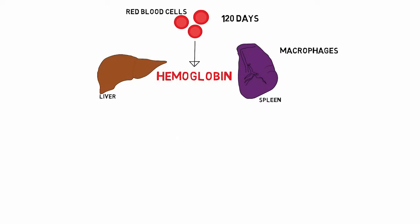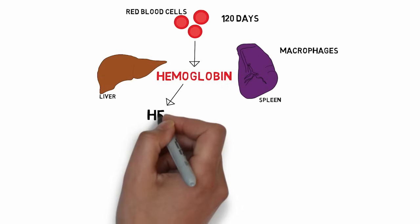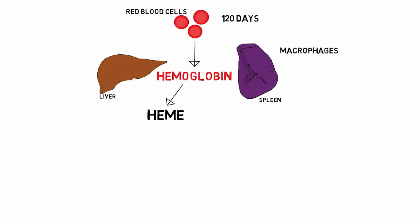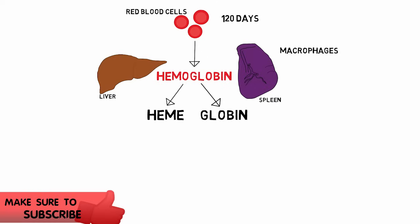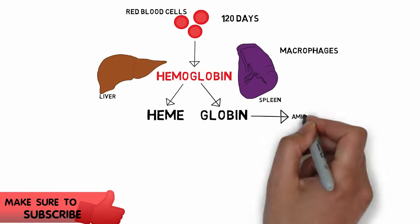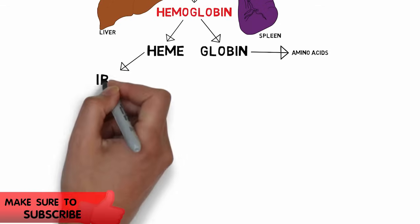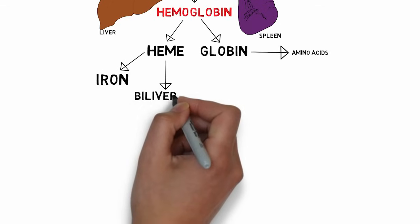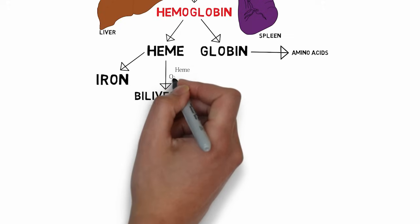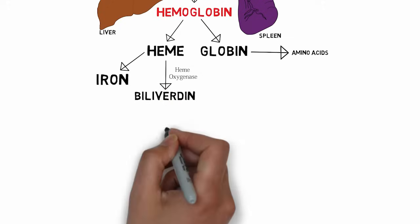This releases the hemoglobin within the red blood cells. The hemoglobin is then split into the heme component and the globin component. The globin is further converted into amino acids and utilized in the body. The heme component is then converted into iron and biliverdin, and this reaction is catalyzed by the enzyme heme oxygenase.